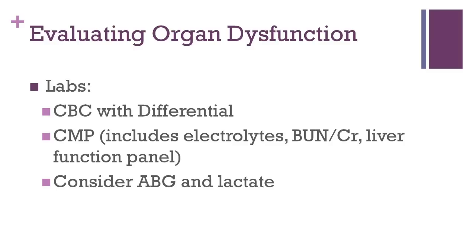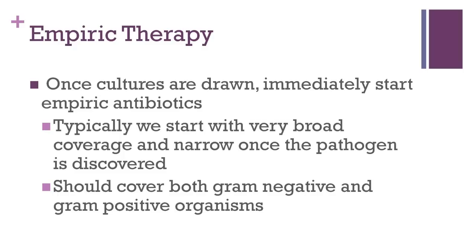In the next podcast, we will address specifically how we try to correct tissue hypoperfusion in septic shock. Finally, empiric antibiotics must be initiated. If the patient has a clear source of infection discovered during workup, therapy may be directed toward the likely pathogens from that source. However, a great majority of the time we are not exactly sure what the pathogen might be, so we start with very broad coverage. Empiric antibiotics should be aimed at covering both gram-negative and gram-positive organisms. If pseudomonas is suspected, two anti-pseudomonal antibiotics should be administered.